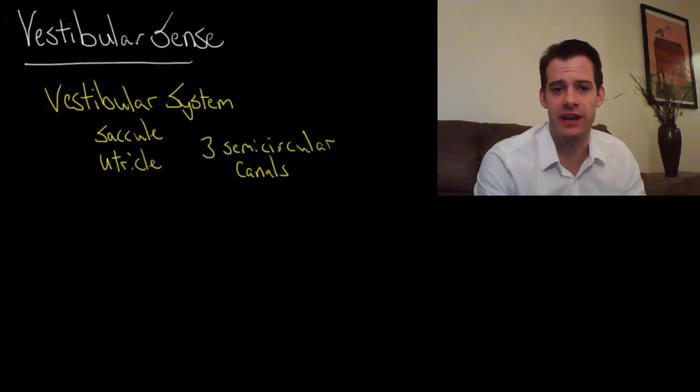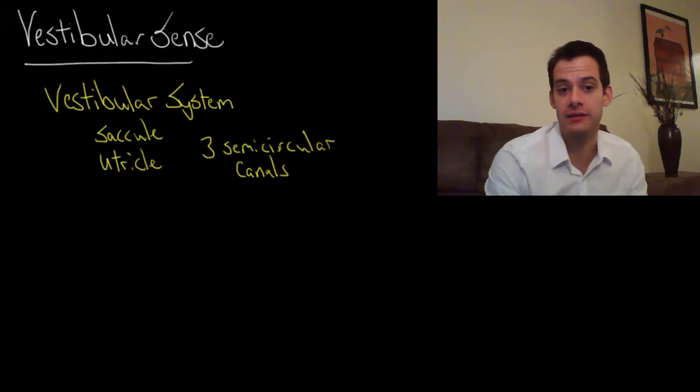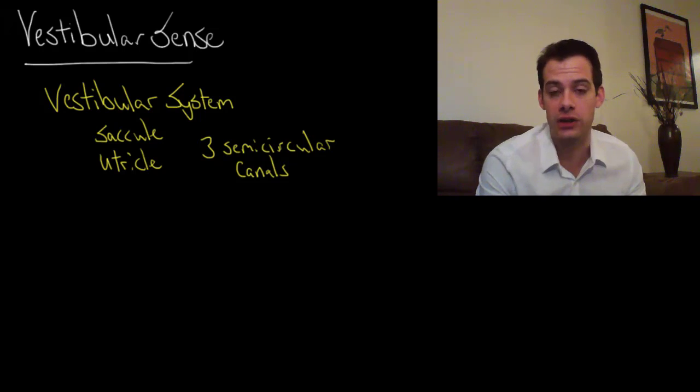I mentioned in the previous video a part of the inner ear called the vestibular system. This is crucial to your vestibular sense. The vestibular system helps coordinate your sense of balance and movement, very similar to the way the cochlea works.